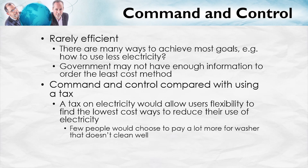Now let's compare command and control with an alternative method: a tax on electricity. A tax on electricity would allow users — would give them flexibility — to find the lowest cost ways to reduce their use of electricity. If a tax of, say, a few percentage points would reduce electricity consumption by exactly the same amount as the command and control approach, the difference is that each one of us would look at the higher price of electricity and would choose, based upon our different circumstances and knowledge and flexibility, which ways we could reduce electricity at least cost.